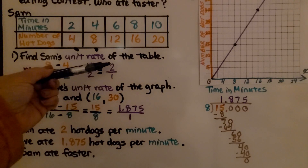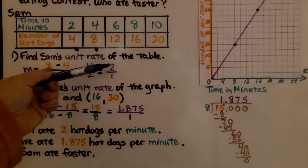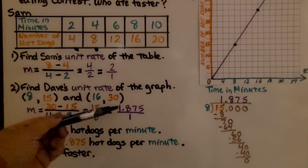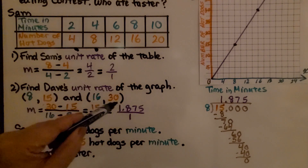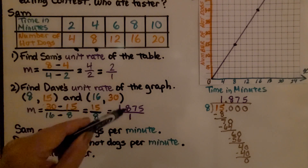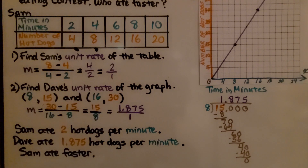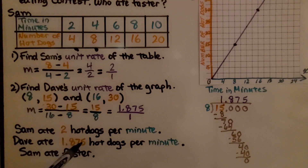Comparing the two: Sam's rate is 2 over 1 versus Dave's 1.875 — that's not quite 2. So Sam ate 2 hot dogs per minute and Dave ate 1.875 hot dogs per minute, meaning Sam ate a little bit faster.